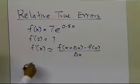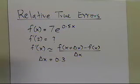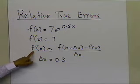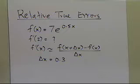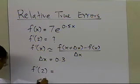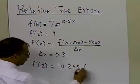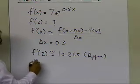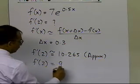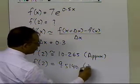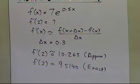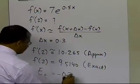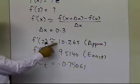In this case, we used delta x equal to 0.3. So if you take this function and want to find the derivative at 2, using the approximate formula with delta x equal to 0.3, we obtained f prime of 2 to be approximately 10.265. And the exact value of f prime of 2 turned out to be 9.5140, up to five significant digits. So the true error obtained was the difference between the two: 0.75061, that's the difference between the exact value and the approximate value.